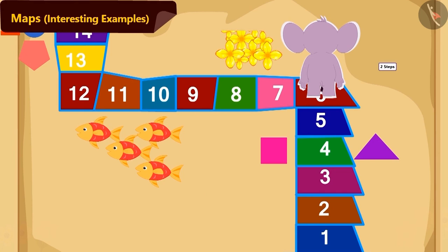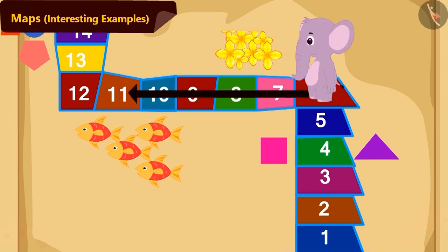First, Appu will walk 2 steps straight. Now, in which direction will Appu turn? Absolutely right, towards left direction. Then, how many more steps will Appu need to walk to reach tile number 11? 5 steps.